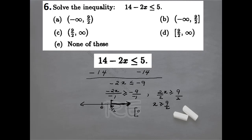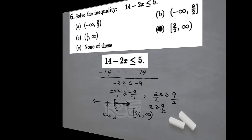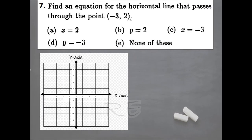So the correct answer should be answer G. Number 7: Find an equation for the horizontal line that goes through the point negative 3, 2.